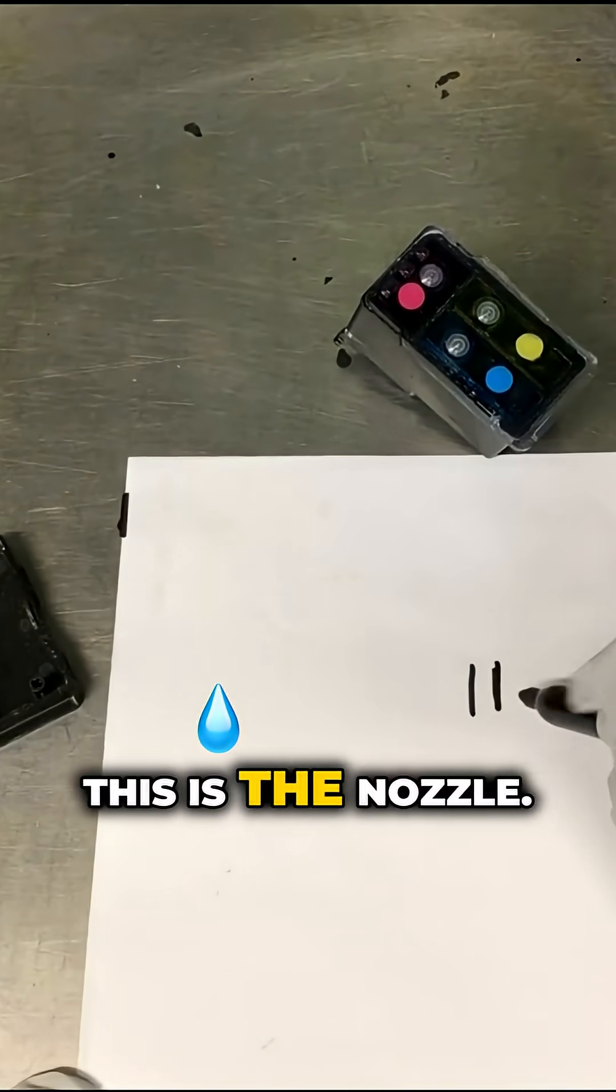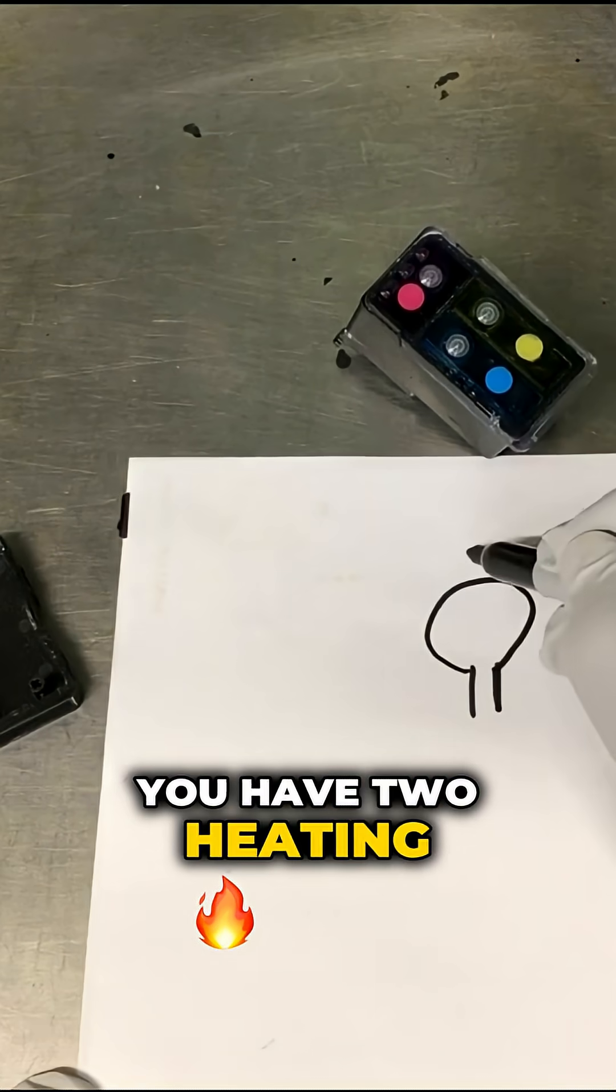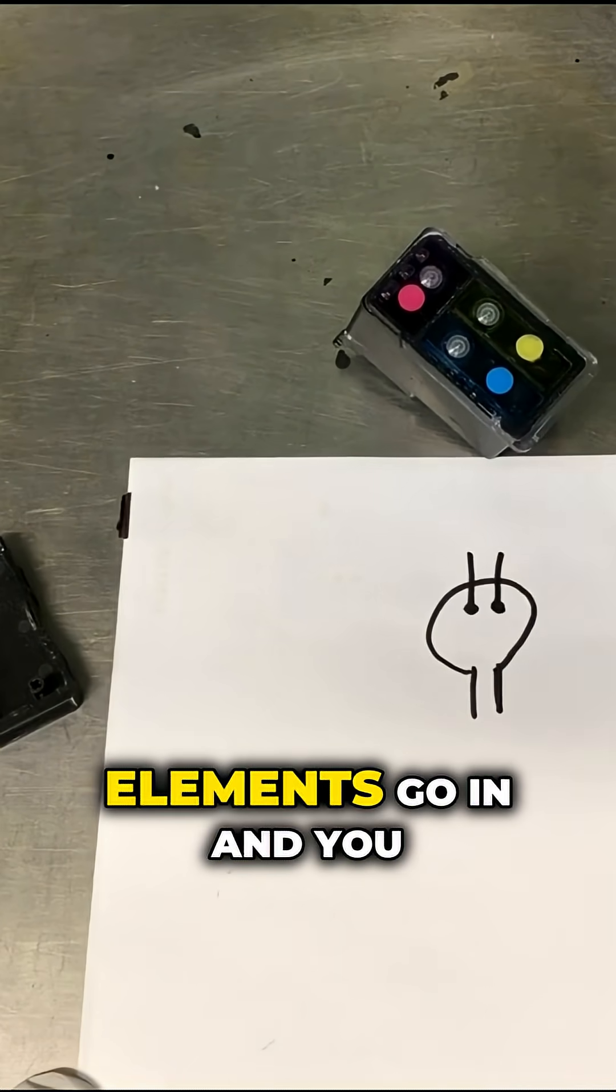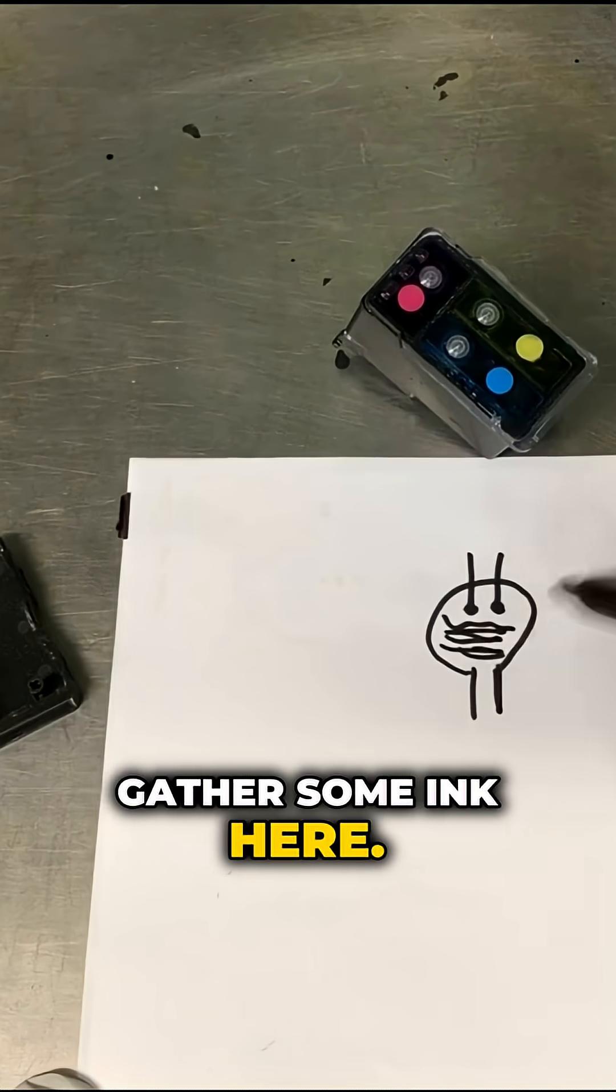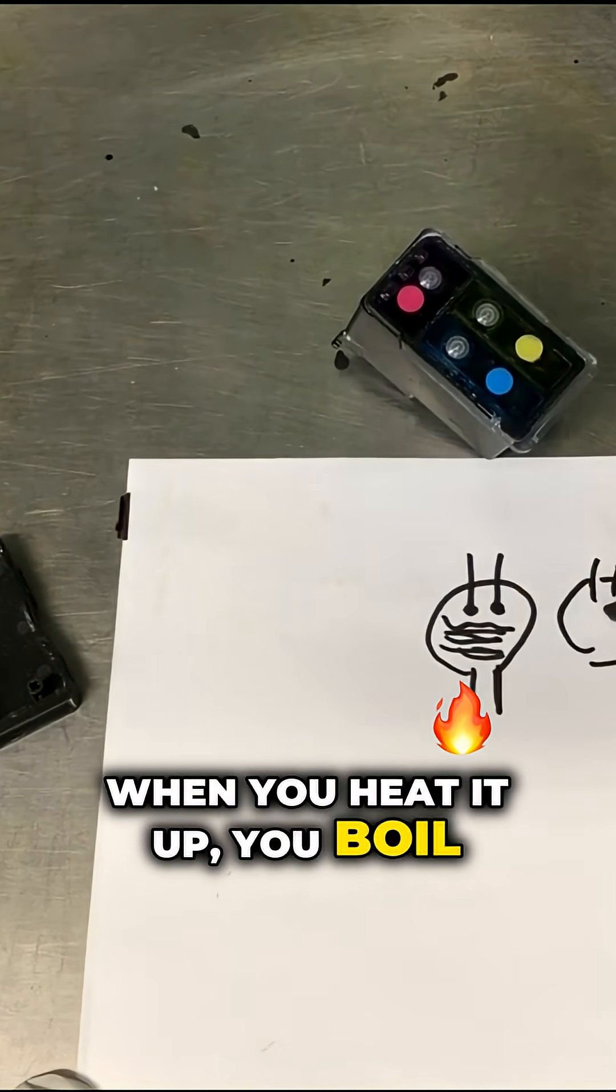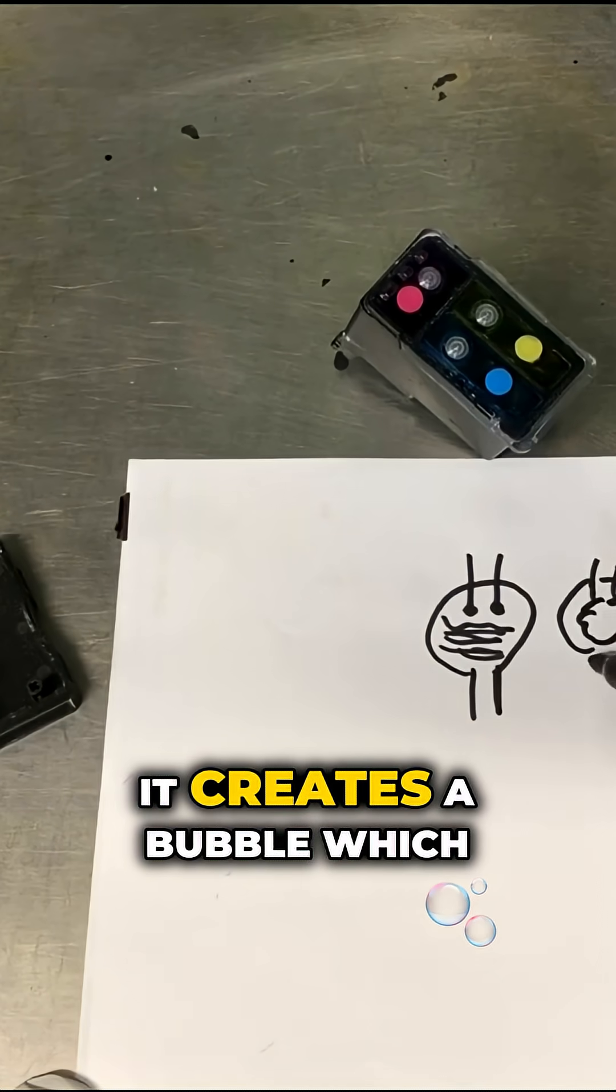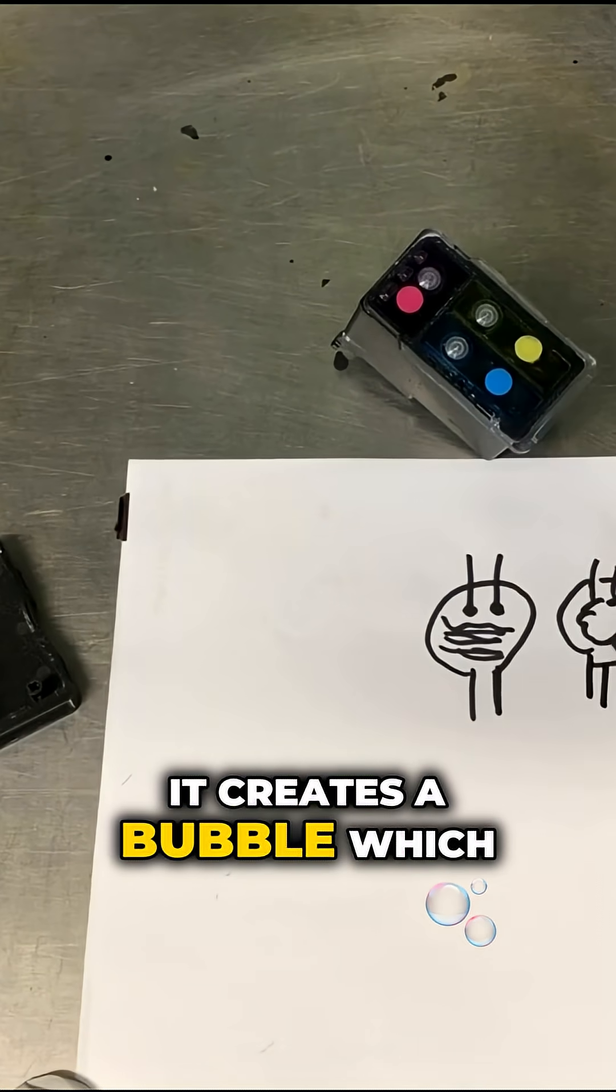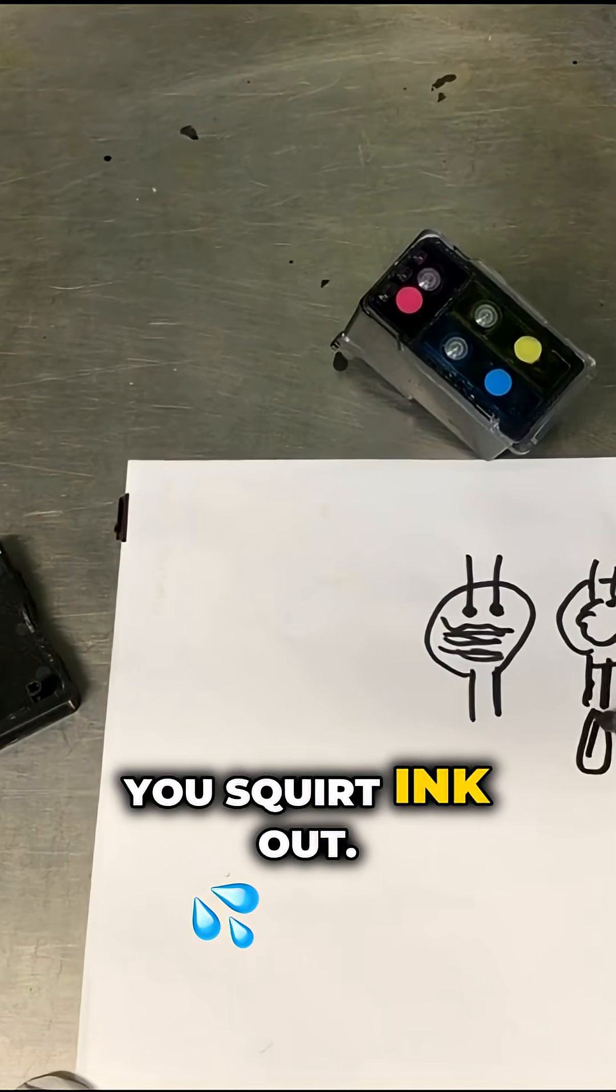This is the nozzle and you have two heating elements. It goes in and you get some ink here. So when you heat it up, you boil the ink. It creates a bubble which squirts the ink out. Let's do it.